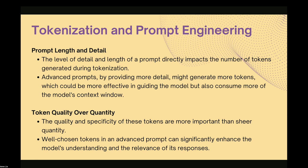The link between tokenization and prompt engineering: the level of detail and length of a prompt directly impacts the number of tokens generated. For advanced prompts, providing more detail translates to more effective guidance of the model toward relevant responses, but it also consumes more of the context window. You want to strike a good balance between detail and context window usage. The quality and specificity of tokens matter more than the sheer quantity of inputs — well-chosen tokens in advanced prompts can significantly enhance the model's understanding.